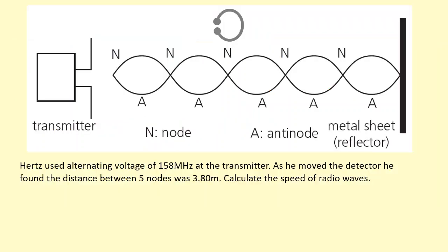He was able to determine the position of these nodes and antinodes by moving the receiver loop between the transmitter and the reflector. So at the positions where it was a node, there would be no sparks because the electromagnetic waves would cancel out and there wouldn't be any EMF induced there. While at the antinodes, you'd get the most number of sparks. So using this, he was able to measure the distance.